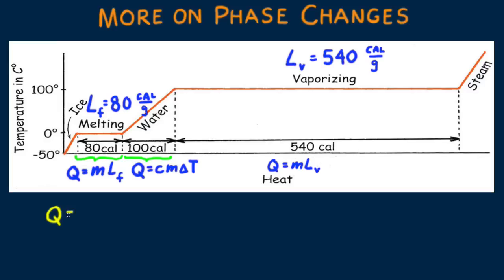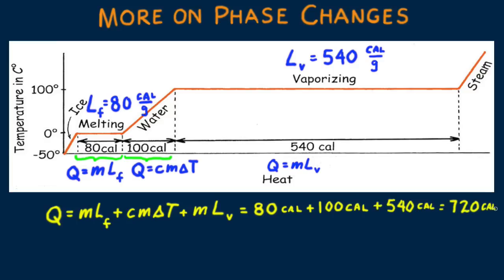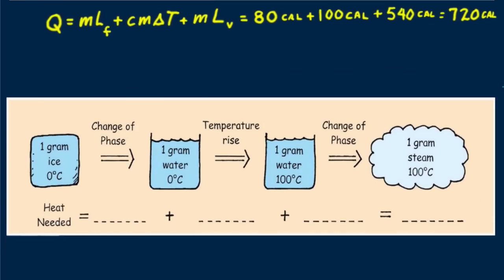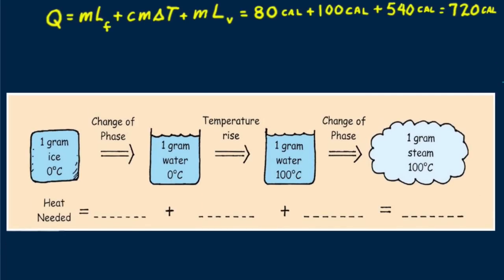Putting all this together to change 1 gram of 0 degree ice to 100 degrees steam, adding each step, we get 720 calories. We review what we've covered pictorially. Can you fill in the values? And we get, as expected, 720 calories.